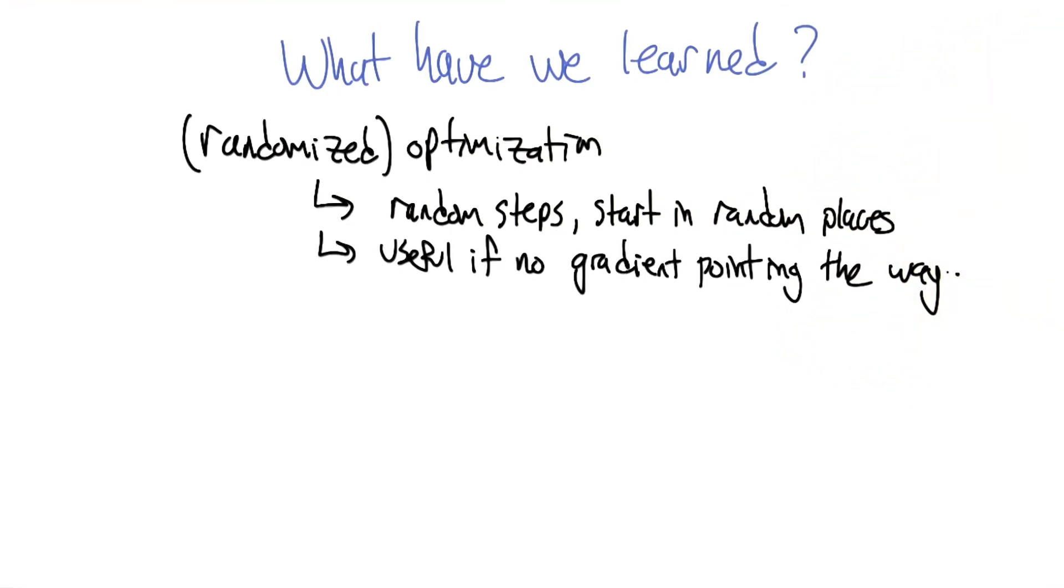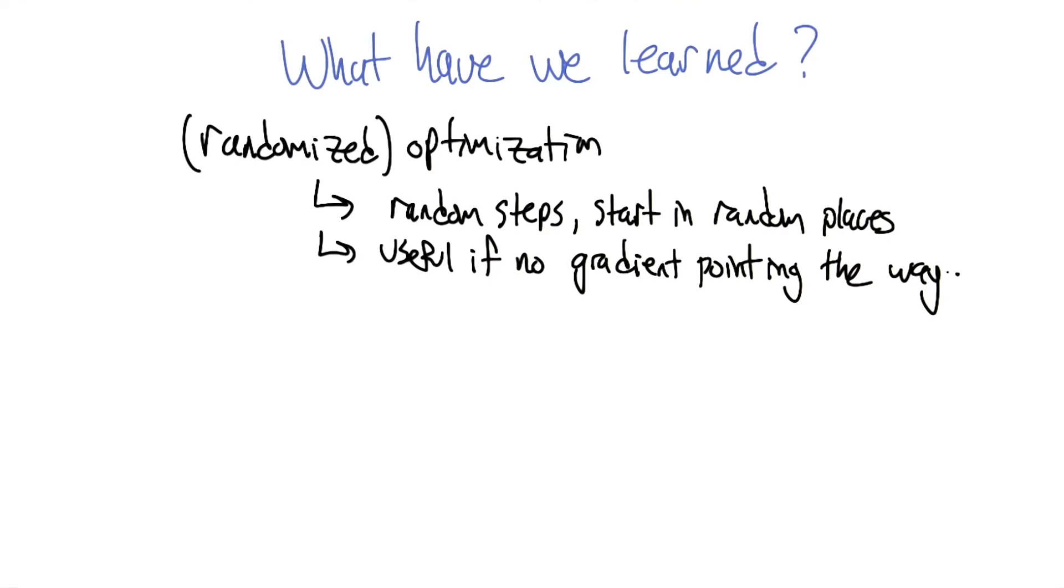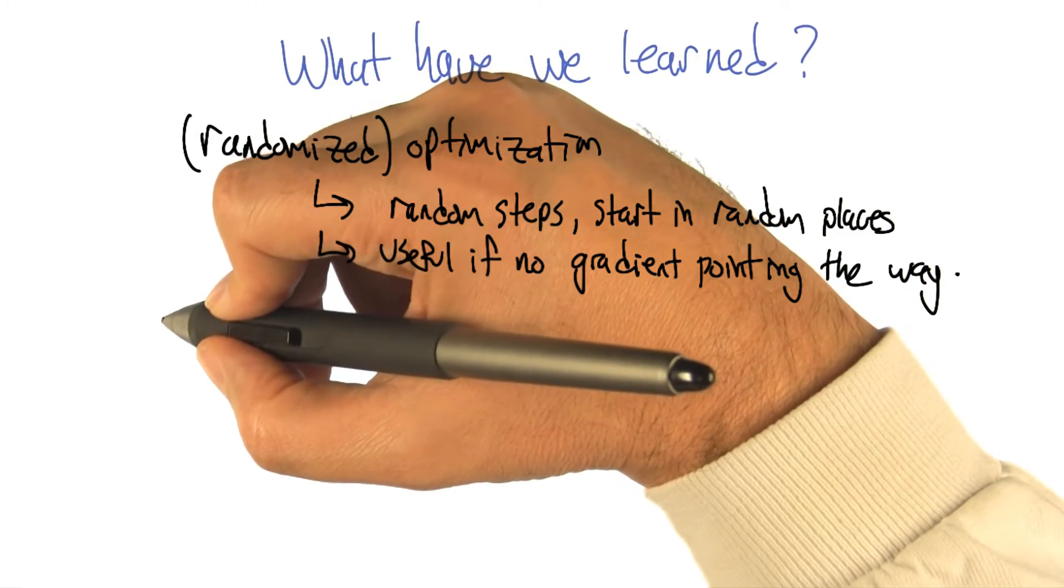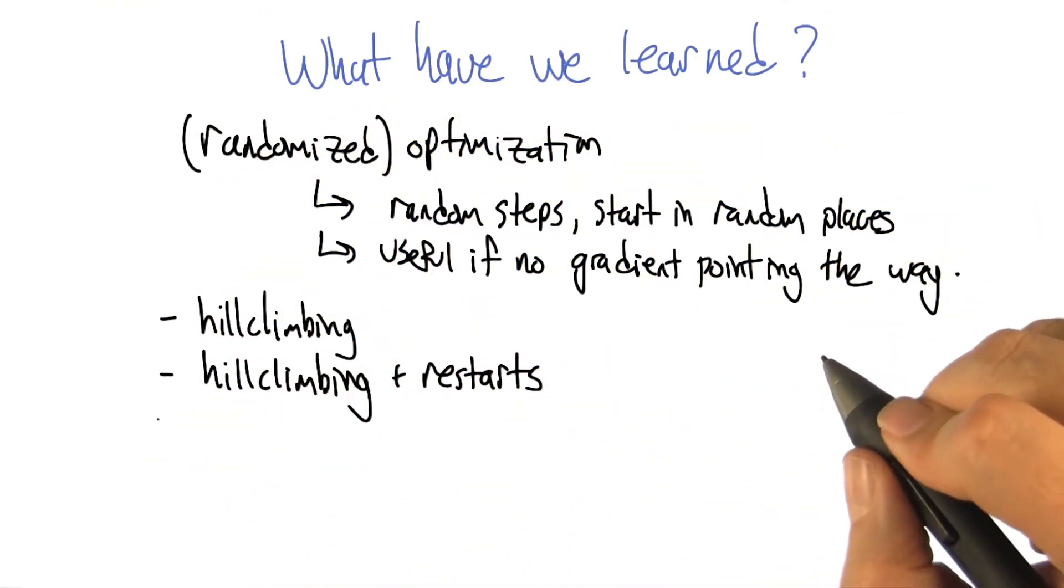And we talked about some particular randomized optimization algorithms. It was randomized hill climbing, and we had two flavors of that. We did simulated annealing and we did genetic algorithms.